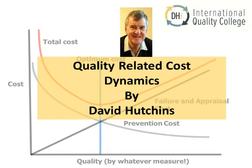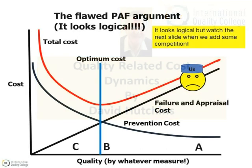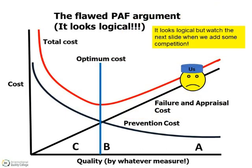Hello, I'm David Hutchins and I'm going to attempt to explain the fallacy of the so-called FAP — Failure Appraisal and Prevention — approach to managing quality-related costs. There is a serious flaw in the FAP argument which will lead to serious problems if not understood.